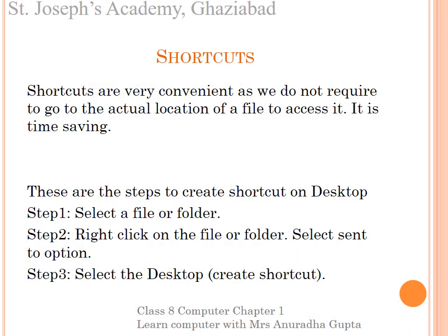Now you have to learn about shortcuts. Shortcuts are very convenient as we do not require to go to the actual location of a file to access it. It is time saving. These are the steps to create a shortcut on desktop. Step 1: select a file or folder. Step 2: click on the file or folder and select Send To option. Step 3: select Desktop, Create Shortcut. Students, please try these steps to create a shortcut on desktop on your system.